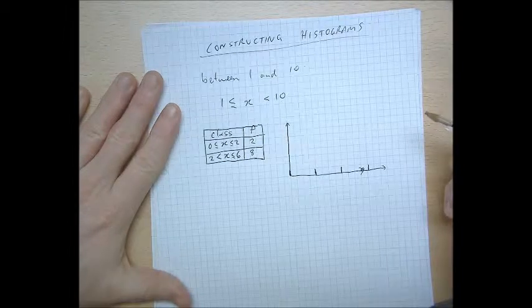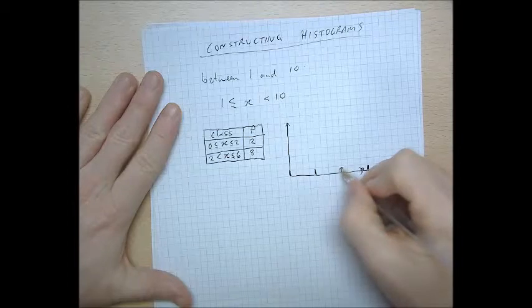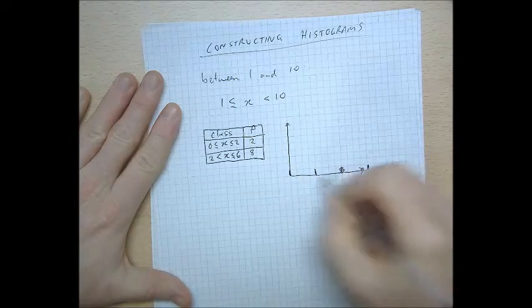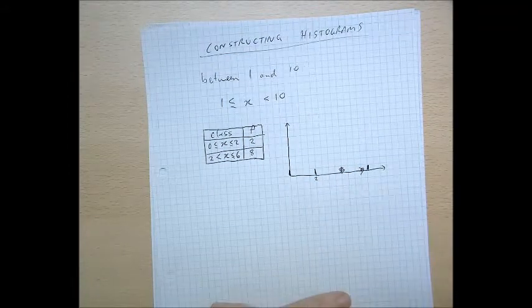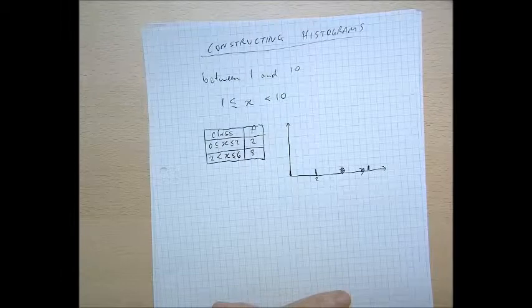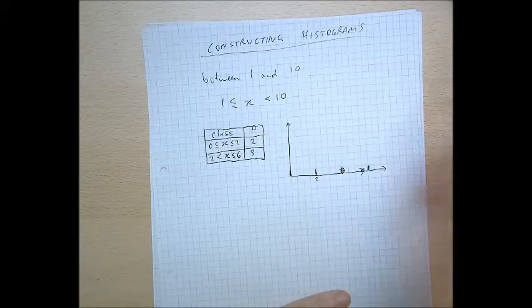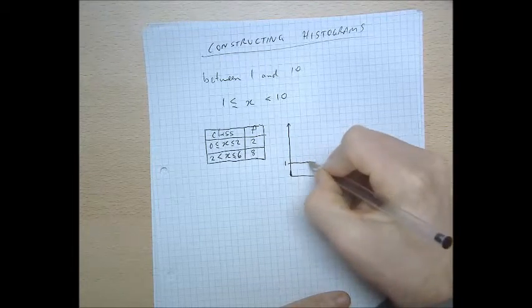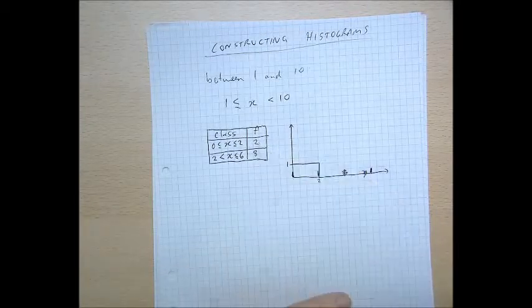Now, the key thing with a histogram that's quite unlike anything you've ever seen before is that the heights of the bars don't directly matter. What matters is the area. So you need to put a rectangle of area 2. It's already got a width of 2, so why not have a height of 1? And then you can look at that and say that it's got an area of 2, which it should because there's a 2 there in the frequency column.